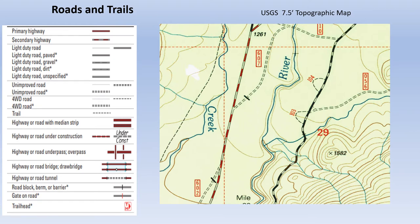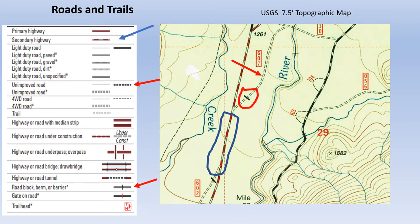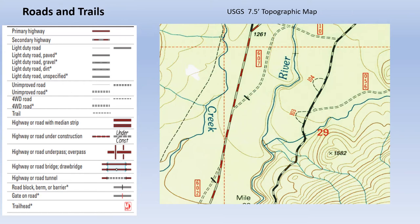The next five slides illustrate the common symbols used for roads and trails. Secondary highways like this are usually paved roads with centerline striping. Unimproved roads like this can be smooth dirt roads or almost impassable rocky paths. This is a physical barrier blocking the road — big rocks and deep ditches are common. Light duty roads are usually suitable for a typical car or truck. Four-wheel drive roads can be little more than a wide trail.